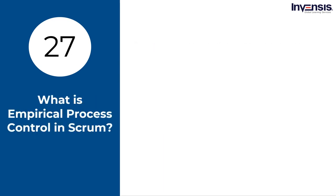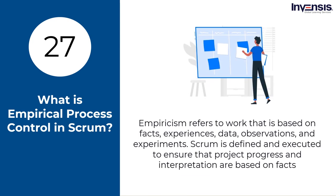What is empirical process control in Scrum? Empiricism refers to work based on facts, experiences, data, observations, and experiments. Scrum is defined and executed to ensure that project progress and interpretation are based on facts. Transparency, observation, and adaptation are all essential components. The team's thinking and the shift of thought process and culture are essential for achieving the agility required by the organization.